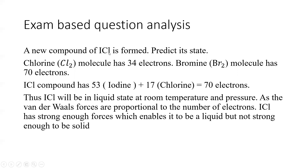Exam-based question: if given iodine chloride (ICl) and asked to predict its state, we know a Cl₂ molecule has 34 electrons and Br₂ has 70 electrons. Iodine chloride has 53 electrons from iodine and 17 from chlorine, totalling 70 electrons — the same as bromine. Since van der Waals forces are proportional to the number of electrons, iodine chloride will probably be a liquid at room temperature and pressure, as it has strong enough forces to be liquid but not strong enough to be a solid.